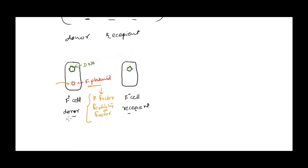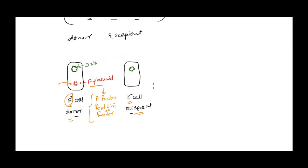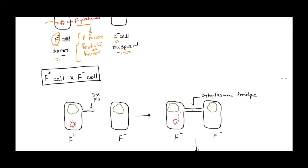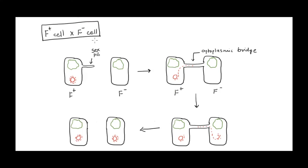The bacteria that has the F plasmid acts as the donor and is designated as an F+ cell, simply because it has the F factor. The recipient cells are those which lack the F factor or do not have the F plasmid, so they are called F− cells. There are three cases in conjugation. In the first case — a cross between an F+ cell and an F− cell — the F+ donor has the F plasmid, while the F− recipient has only its chromosomal DNA.